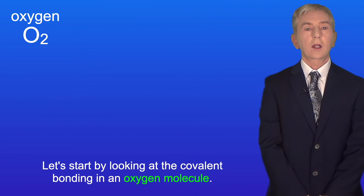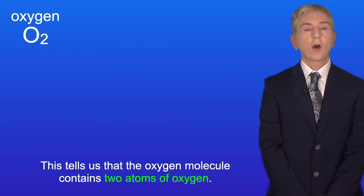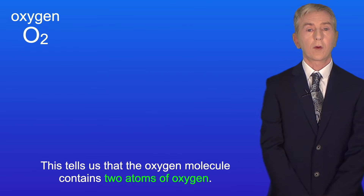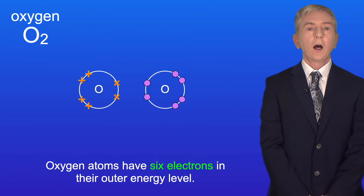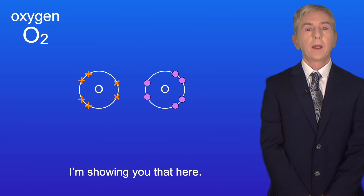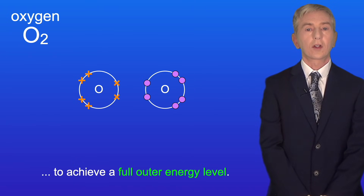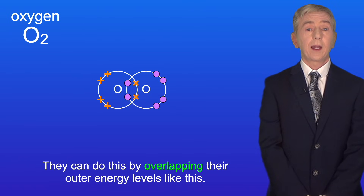Let's start by looking at the covalent bonding in an oxygen molecule. An oxygen molecule has the formula O2, which tells us it contains two atoms of oxygen. Oxygen atoms have six electrons in their outer energy level, and each oxygen atom requires two more electrons to achieve a full outer energy level. They can do this by overlapping their outer energy levels.